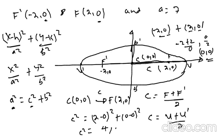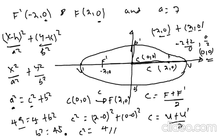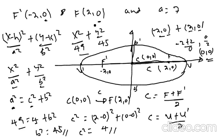So c squared equals 4. Then a squared equals 49, equal to 7 squared. So 49 equals c squared 4 plus b squared. So b squared equals 49 minus 4 equals 45. Therefore the equation is x squared over 49 plus y squared over 45 equals 1.